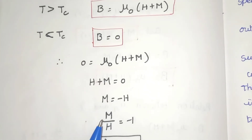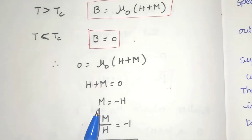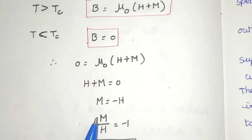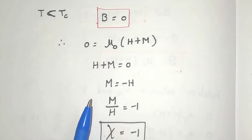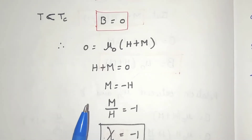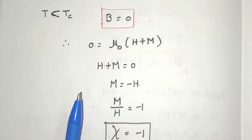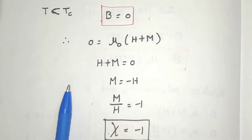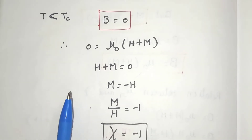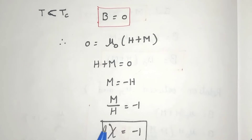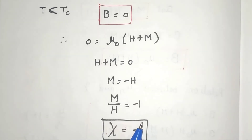Therefore M/H = −1. M/H is the magnetic susceptibility — the ratio between the intensity of magnetization M and the applied magnetic field H. Here, the magnetic susceptibility χ equals −1.